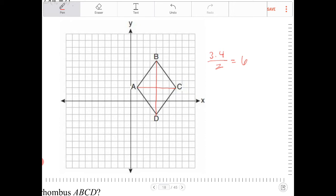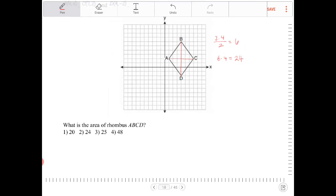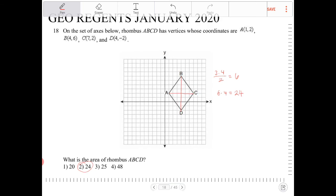So the area of the rhombus is six times four, which equals 24. Therefore, my answer is 24. That's all it is.